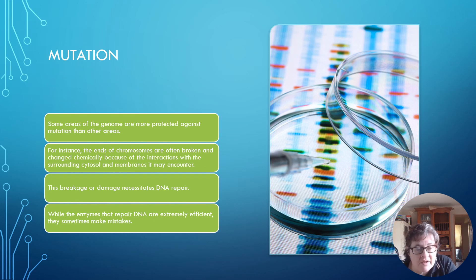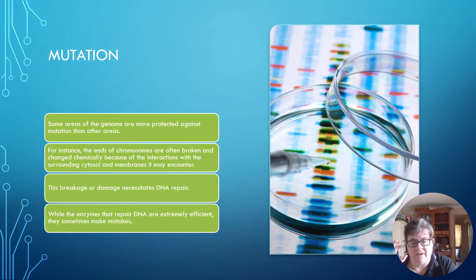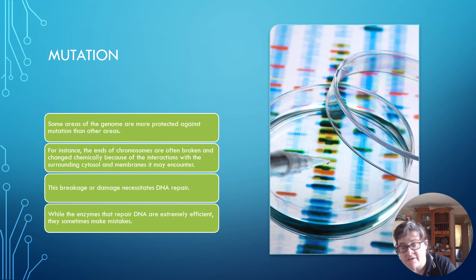What is mutation? Some areas of the genome are more protected against mutation than others — some will mutate more and some are protected. For instance, the ends of chromosomes are often broken and changed chemically because of interactions with the surrounding cytosol and membrane. The end genes can deteriorate because of the cytosol and membranes in the cell. DNA is in the nucleus and it becomes RNA that goes out into the cell.